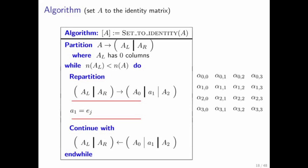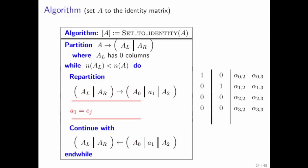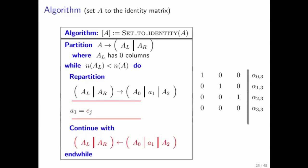Let's look at an algorithm that takes a matrix and sets it equal to the identity matrix. Notice that the matrix that comes in has to be a square matrix, because the identity matrix is inherently square. This algorithm follows exactly the algorithm we used to set a vector to zero. We start by partitioning the matrix into a left and a right part, where the left part has 0 columns. We then expose a column, set it to the first unit basis vector, move on, expose the next column, set it to the unit basis vector, and continue until we're done.